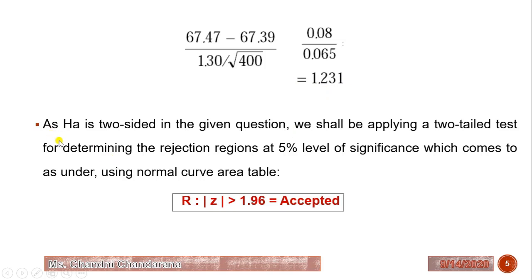Since the alternative hypothesis is two-sided, we apply a two-tail test to determine the rejection region at the 5% level. From the table, the critical Z value is 1.96. The observed Z value of 1.231 falls within the acceptance region, so our null hypothesis is accepted.